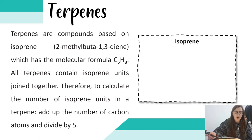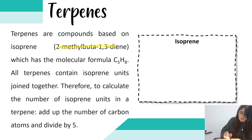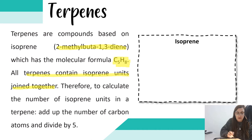Terpenes are compounds based on a molecule of isoprene, and essential oils contain molecules of terpenes — they are basically lots of terpene molecules joined together. The isoprene unit is 2-methyl-buta-1,3-diene, which has the molecular formula C5H8, and all terpenes contain isoprene units joined together. To calculate the number of isoprene units in a terpene, add up the number of carbons in the molecule and divide by 5.